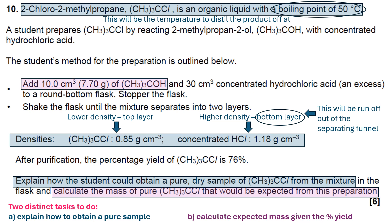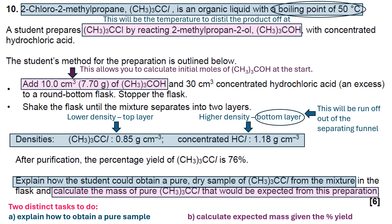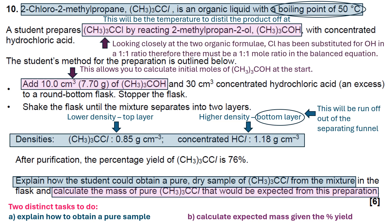It tells you the quantity of (CH₃)₃COH, which will allow us to calculate the initial moles of that compound at the start. The reaction is (CH₃)₃COH with concentrated hydrochloric acid. If you look closely at the organic formula, you've got a Cl and you've got an OH, so the Cl has been substituted in a 1-to-1 ratio. Therefore there must be a 1-to-1 mole ratio in the balanced equation.